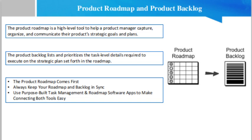Why must the product roadmap and product backlog be separate? The product roadmap and product backlog both serve important functions in product development, but these functions are very different. This is why these tools should be used in conjunction with each other but not interchangeably. Without a high-level overview of your product's strategic objectives and plans, you cannot effectively build a useful, prioritized list of tasks for developing the product. So you need a standalone, clutter-free strategic roadmap to capture and communicate this strategy.